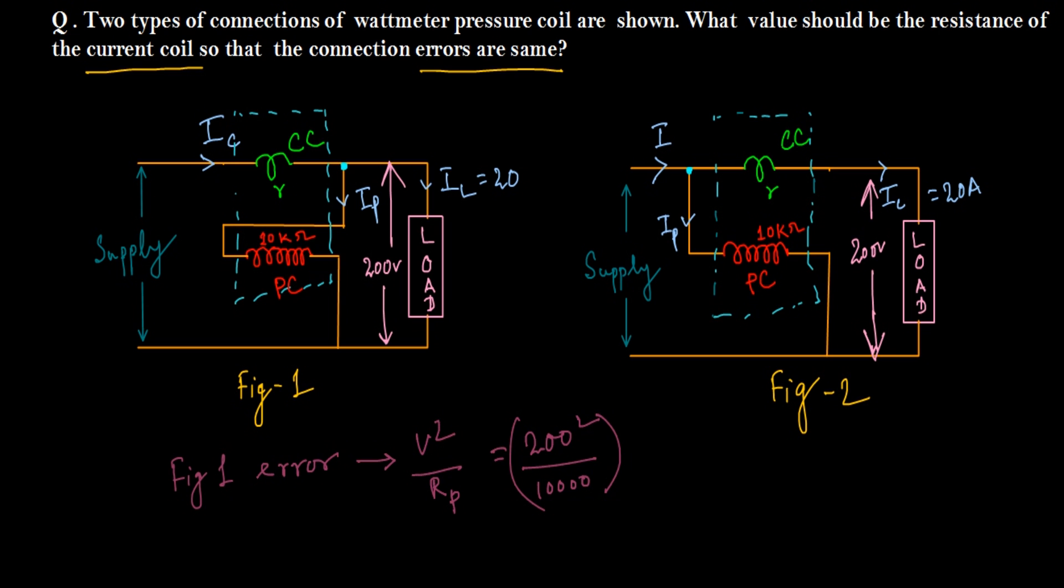Now for figure 2, connection error is equal to IC squared into current coil resistance. That is equal to, here I equals 20, so that is 20 squared into R or 400R.